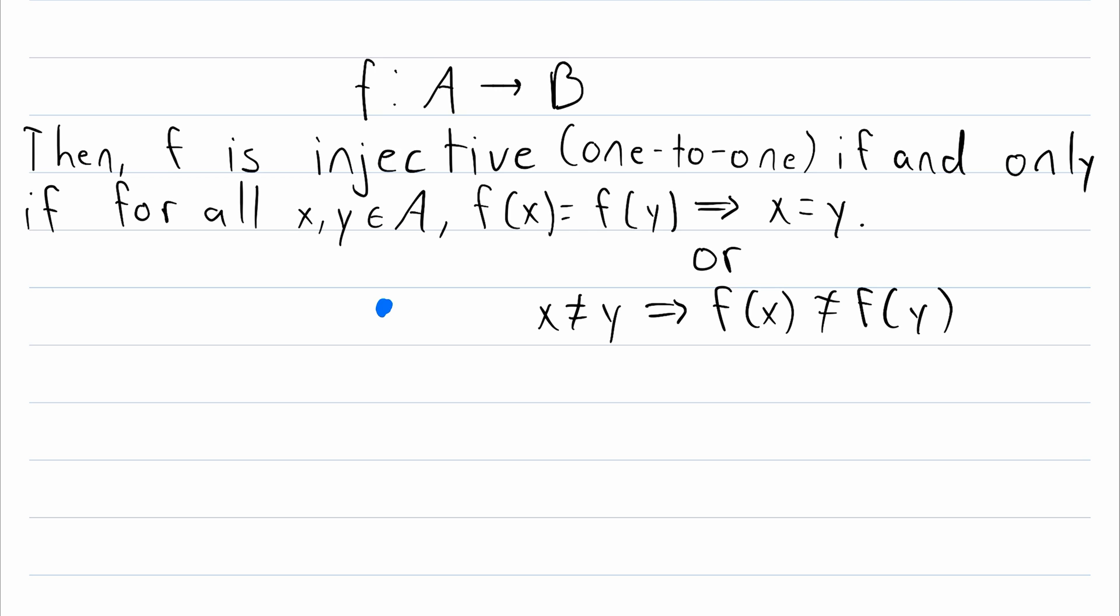So the idea is that in an injective function no element in the codomain gets mapped to more than once. It might get mapped to zero times, it might get mapped to once, but for a function to be injective, no element of the codomain can be mapped to more than once.